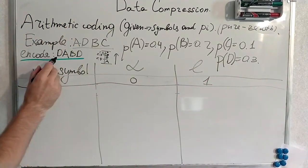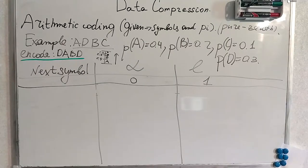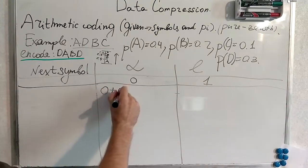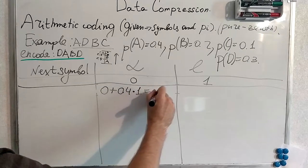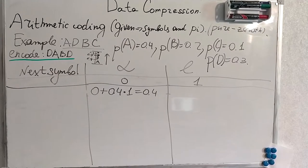So we are going to encode DABD. That's why we are going to use our formula. 0 plus 0.4 multiplied by 1 equals 0.4.